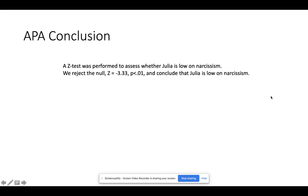Our APA style conclusion: we introduce the test — a Z-test was performed to assess whether Julia is low on narcissism. We reject the null because her Z-score of negative 3.33 is beyond our alpha point of 0.01 at negative 2.33. We conclude that she is, in fact, low on narcissism.